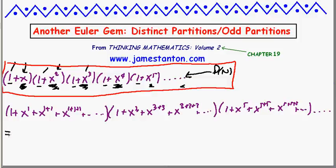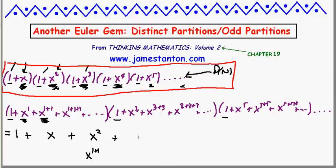What happens when we expand this? The constant term comes from choosing 1 in each factor. A single x comes from choosing x in the first factor and 1 everywhere else. For x², we choose x² (= x^{1+1}) from the first factor — only one way. For x³, we can get it from x³ in the second factor, or from x³ (= x^{1+1+1}) in the first factor — two ways.